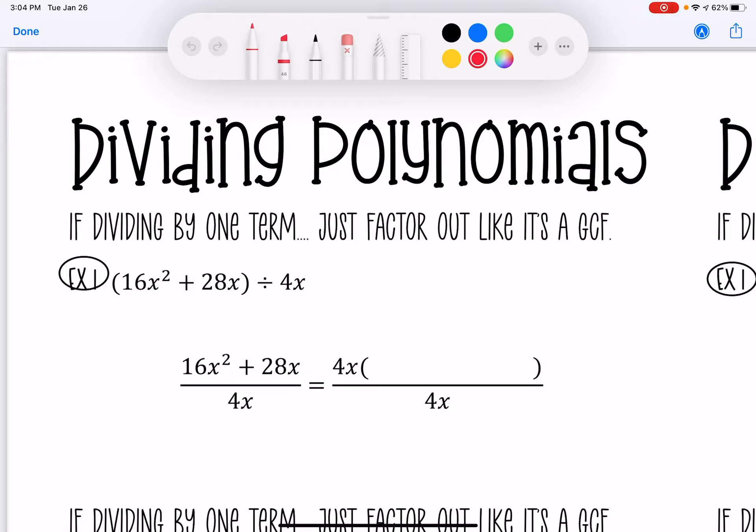If you're just dividing by one term or by one monomial, then it's just like factoring out its GCF, except I'm telling you what the GCF is typically. So check this out. I told you we were dividing it by 4x.